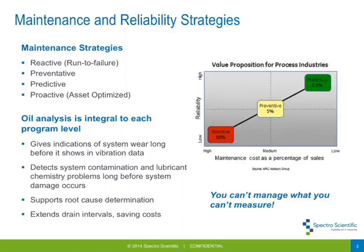It's all about lowering costs. It's well known that if you move to a predictive program and get a jump on failure before it occurs — or nurse it as it's occurring — you can significantly reduce your costs by planning ahead, putting your time in, catching a failure and avoiding downtime. In the process industries, you can see at least an 8% improvement in maintenance as a percentage of sales by using a predictive approach versus a reactive approach.